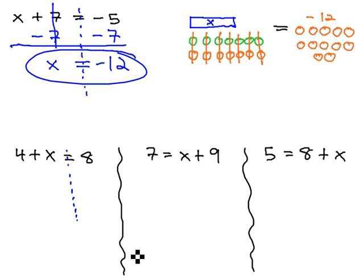In this next example, 4 plus x equals 8, we want the x alone, so we have to get rid of the positive 4 with 4 negatives on both sides. When we do, the 4's subtract out, and we get x equals 8 minus 4, or 4.